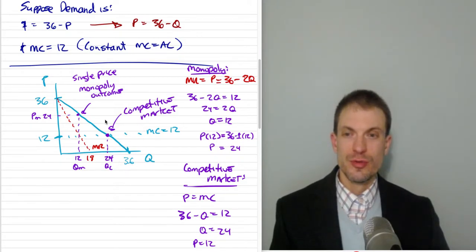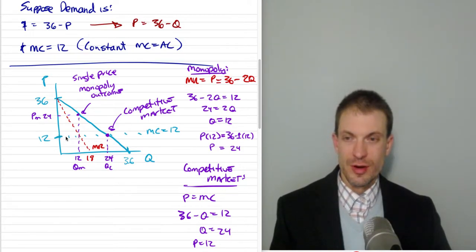What would the competitive market do? The competitive market would produce where price equals marginal cost. Here's our marginal cost, constant average cost, and here's my demand that gives us our price.